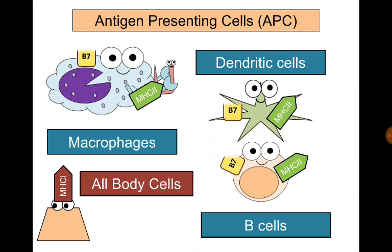Antigen-presenting cells also have B7 molecules on their surfaces to deliver the second signal for T-helper cell activation. B-lymphocytes also have CD40 molecules on their surfaces.